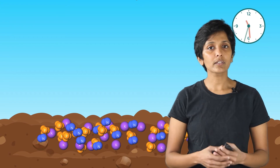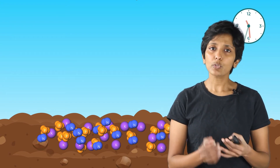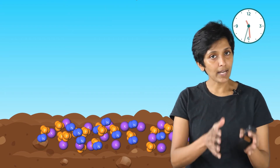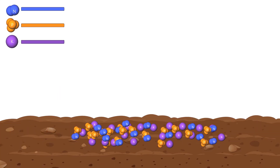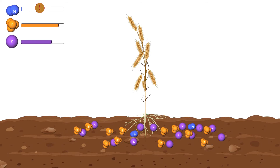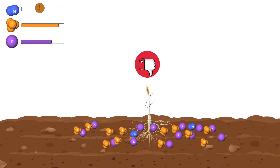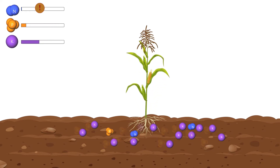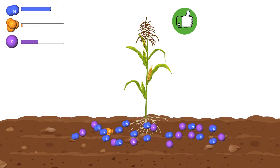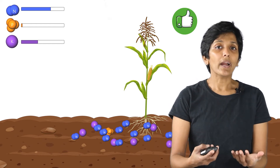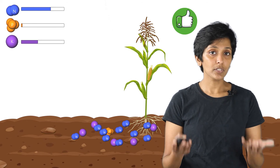Another famous method is crop rotation. It's based on the principle that different crops need different nutrients in different quantities. For example, after harvesting a nitrogen-heavy crop, the land is depleted of nitrogen. Planting a crop that needs more phosphorus instead allows the land to slowly regain nitrogen, making it ready for the next crop. This is a widely used method to naturally replenish soil nutrition.